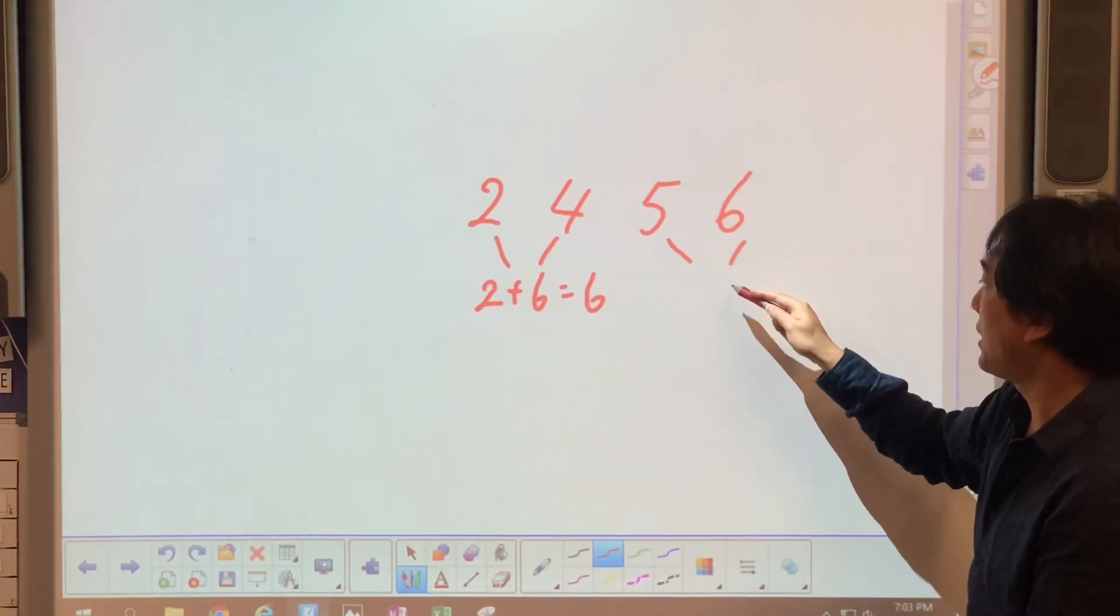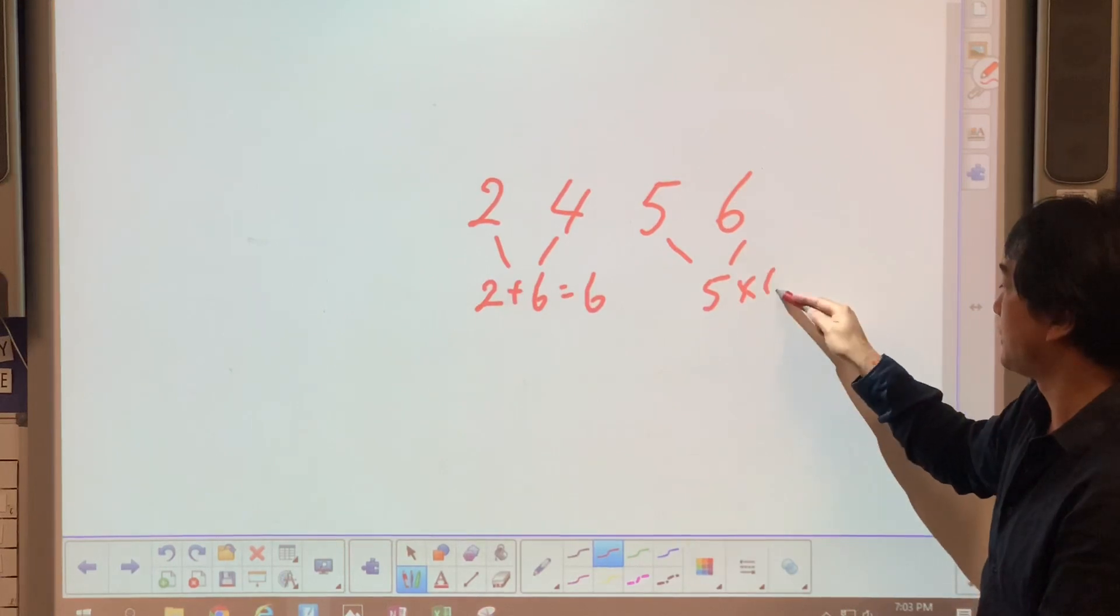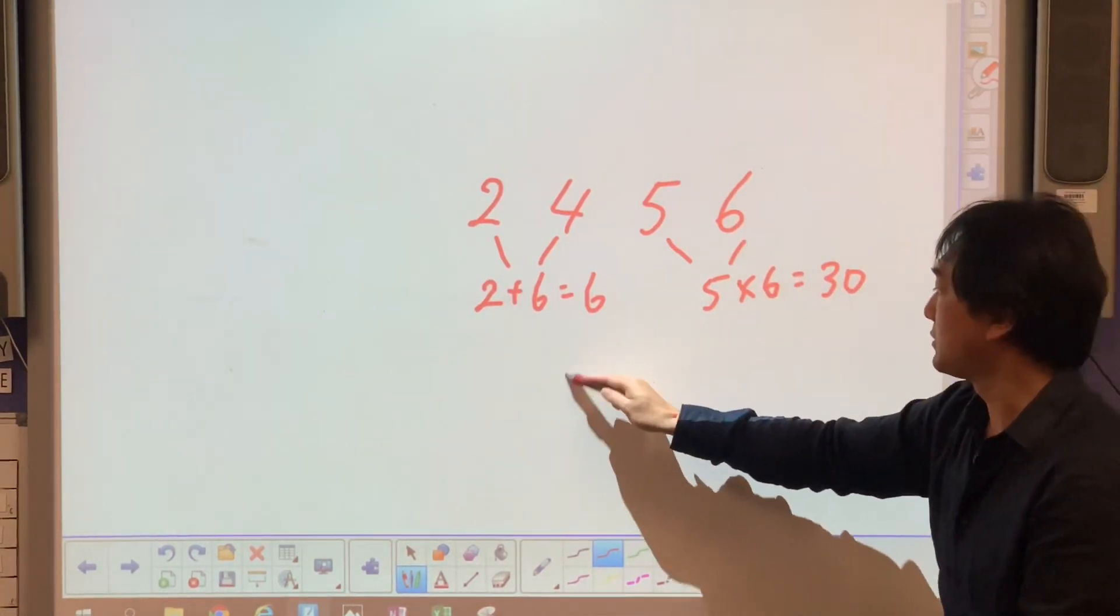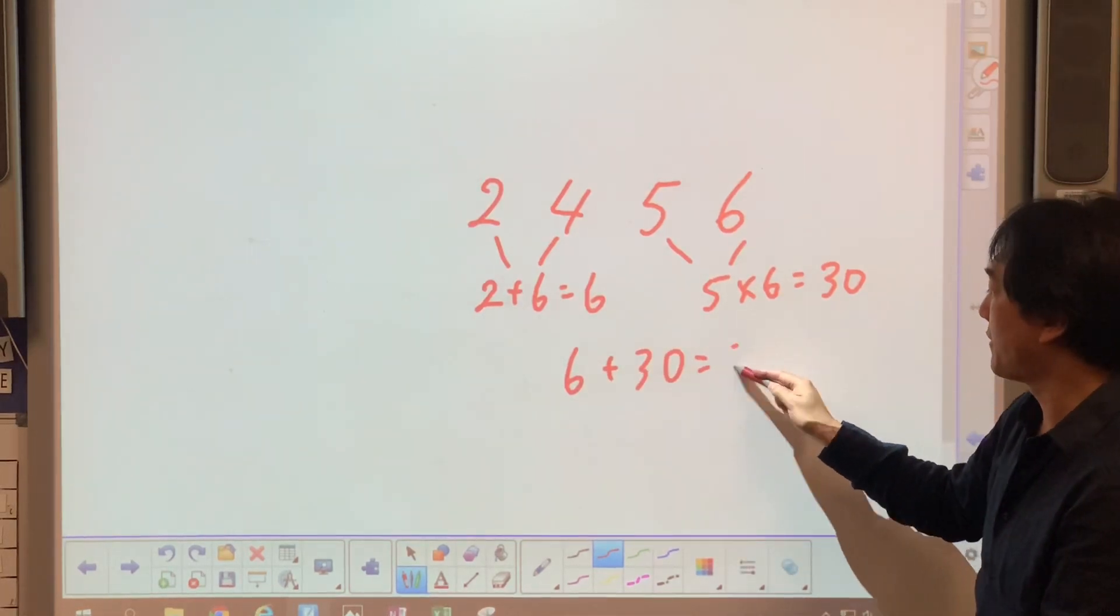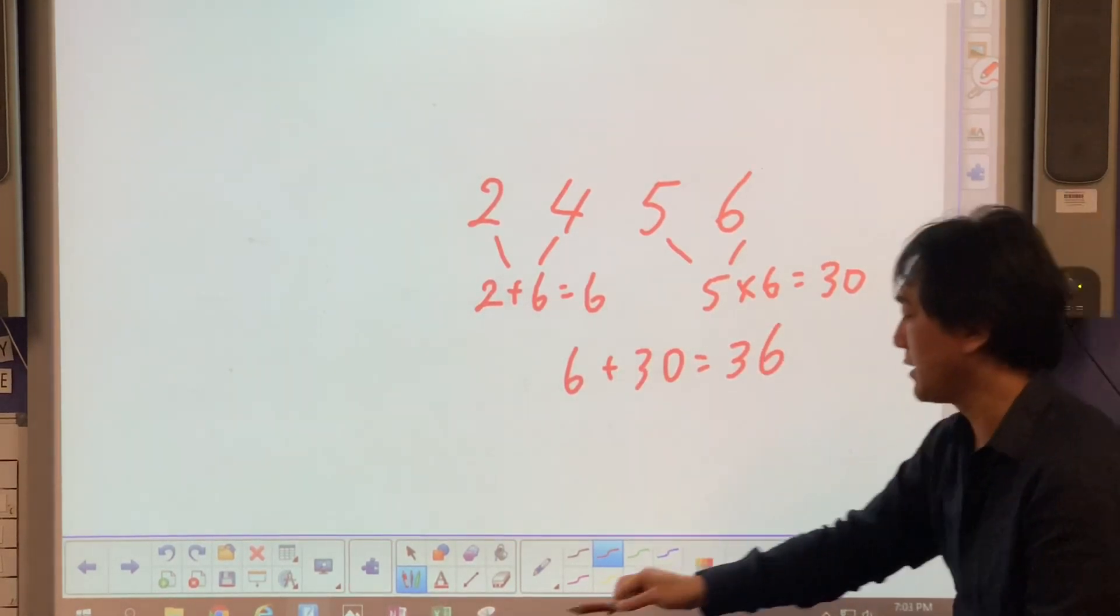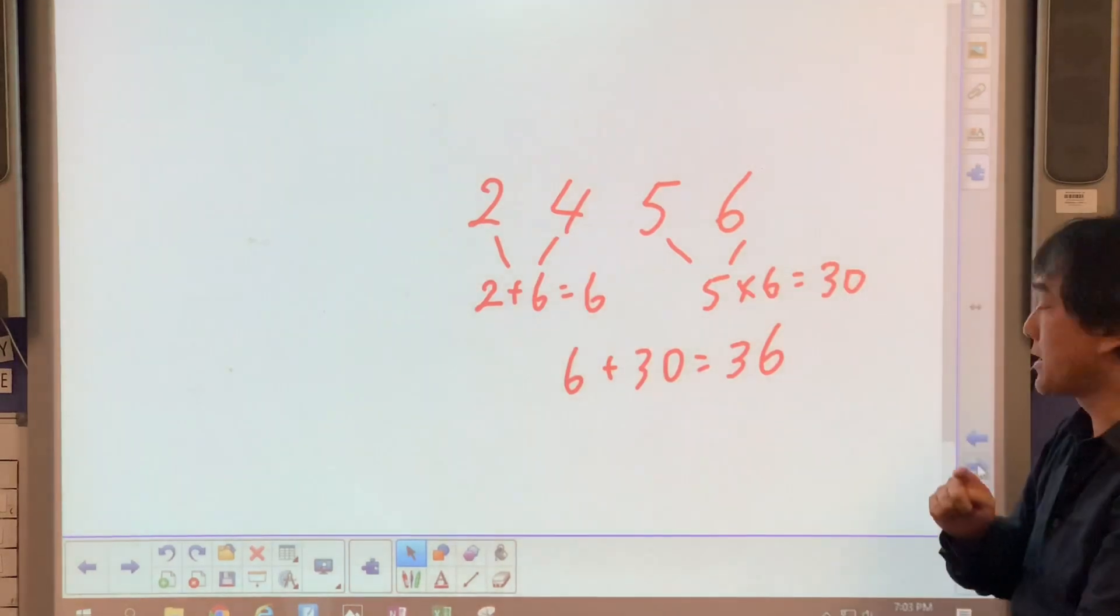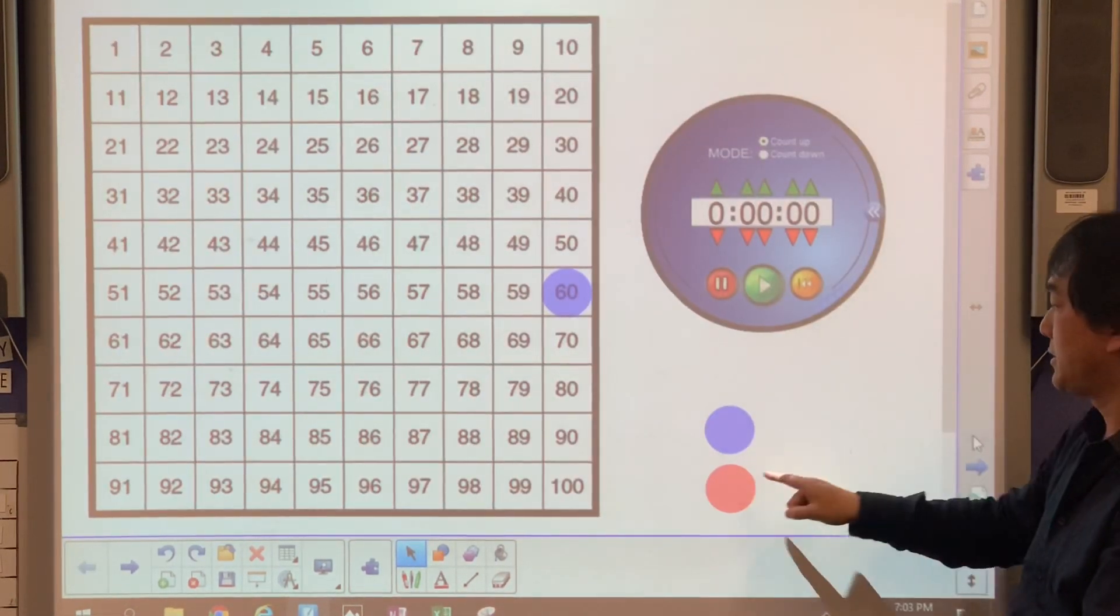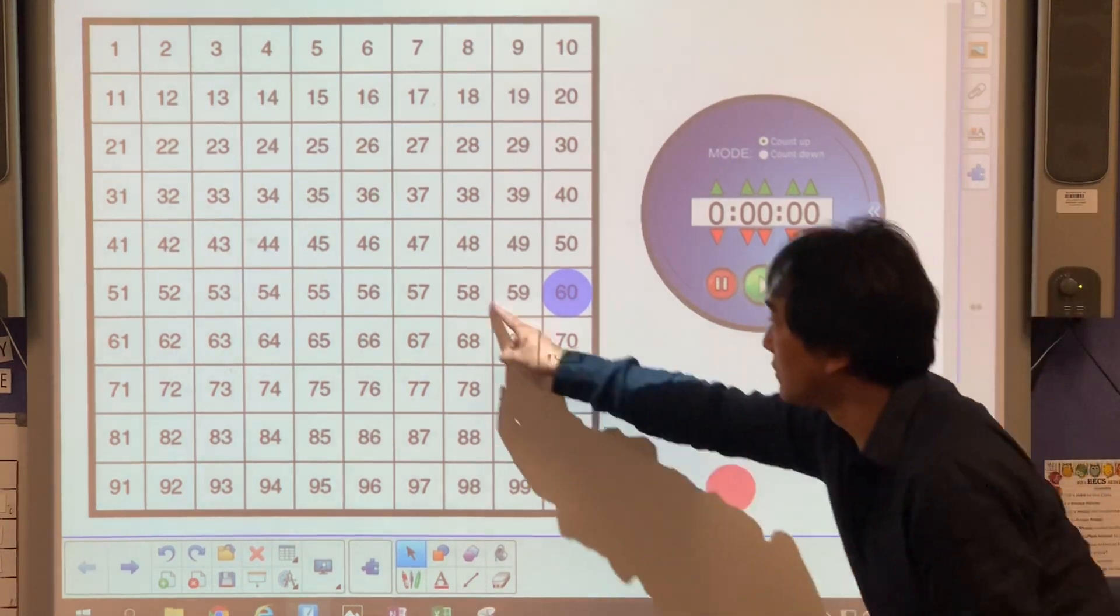Five times six is thirty, plus six is thirty-six. That is the beginning counter for the red team - thirty-six right there.